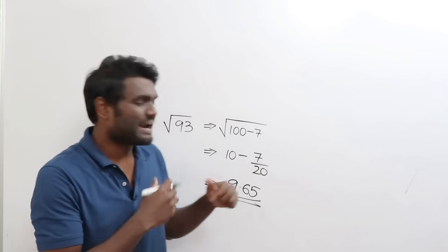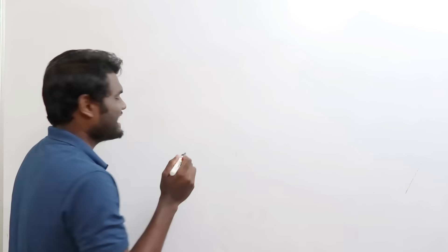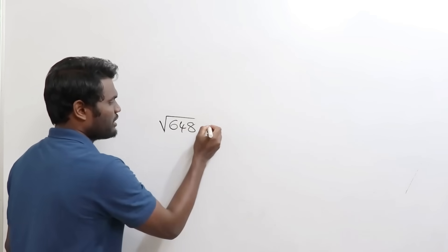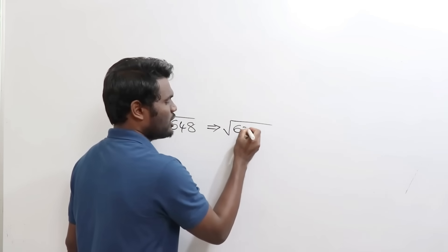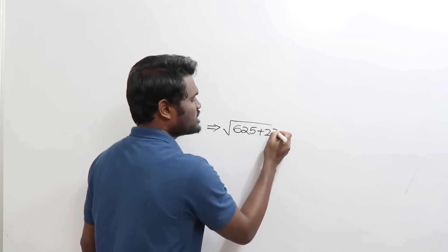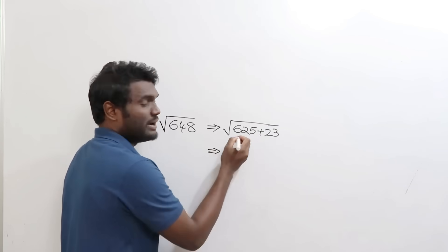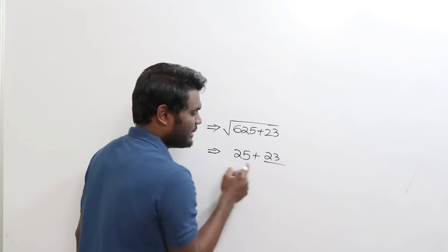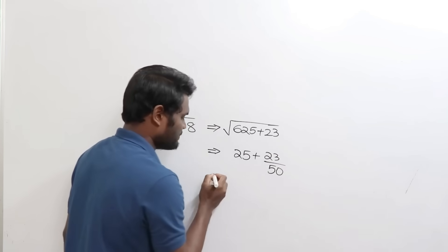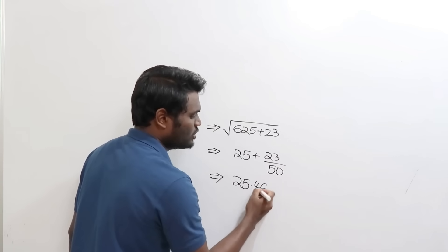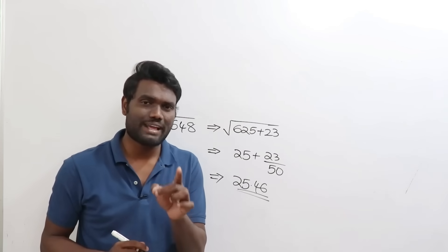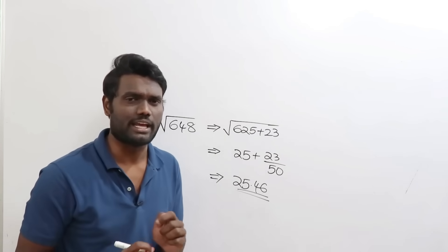When you practice more examples you can solve these quickly. Let us calculate square root of 648. Write 648 in terms of 625: this gives 625 plus 23. Square root of 625 is 25. As it is plus, write plus. Write 23 divided by double of 25, which is 50. When you simplify, this gives 25.46. So square root of 648 ≈ 25.46. You can verify with a calculator.